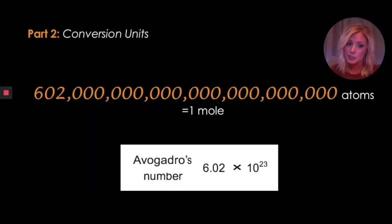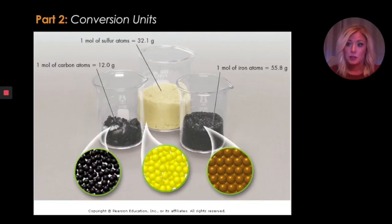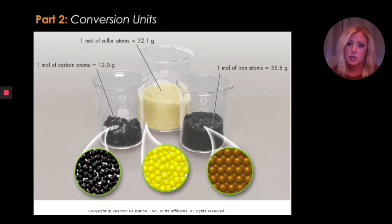Just like we did with the apples, scientists in chemistry use this for atoms. Atoms are so tiny that you have to group a whole lot of them together to really get something heavy enough to quantify. So we use scientific notation to talk about Avogadro's number. In one mole of carbon, if you collect 6.02 × 10²³ atoms of carbon and put it on a scale, it would weigh 12.01 grams. Sulfur would be 32.1 grams, and iron would be 55.8 grams — each element has the same number of atoms but different weights.